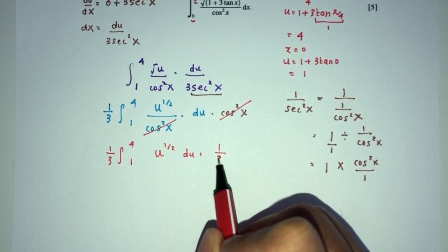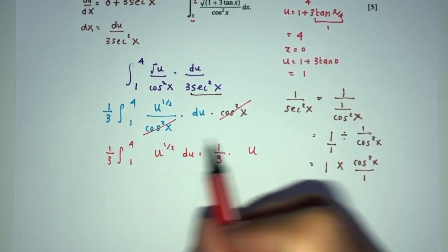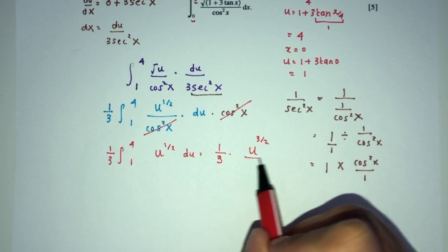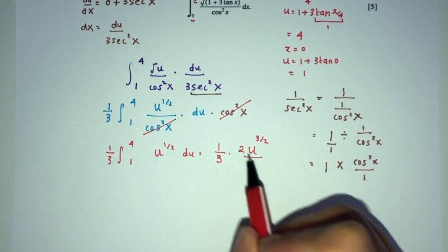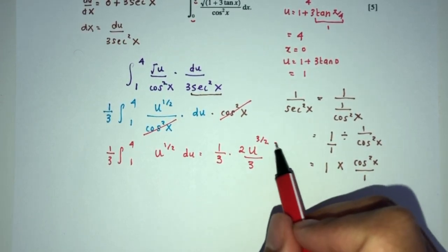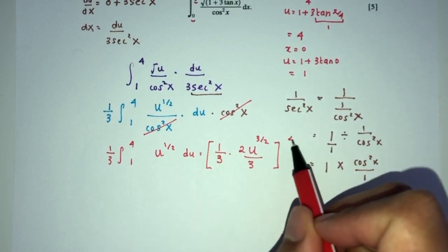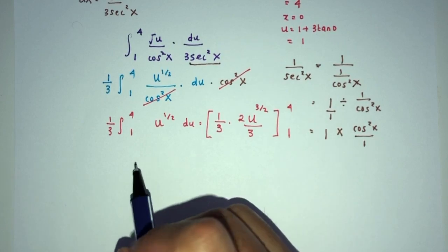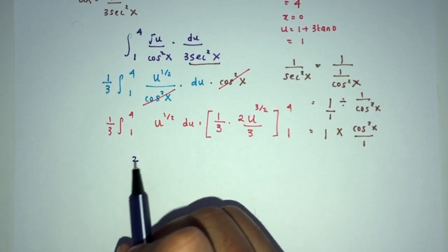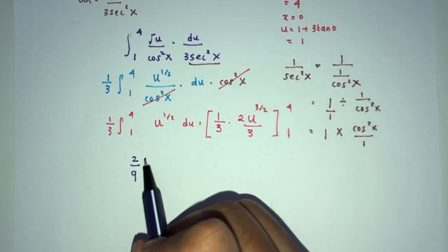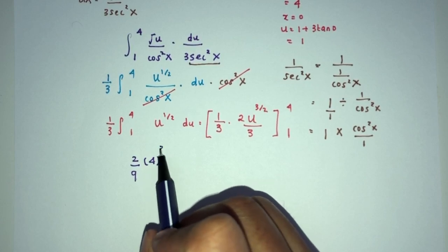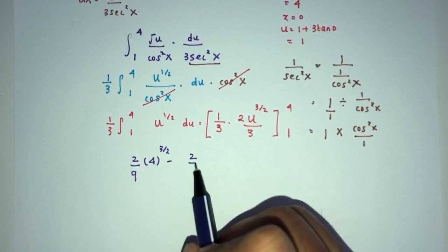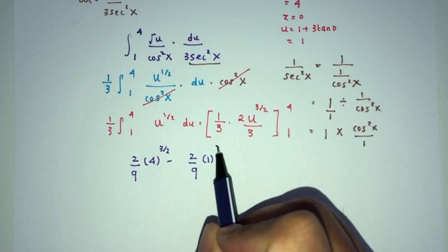That will be 1/3, that will become u plus 1, that should be 3/2. Divide by 3/2, 2 will go here, 3 will go down. And then here we have the limits of the values 4 and 1. So simplify. So we have 2/9, here we have u, which is 4, 3/2. Minus 2/9, 1^(3/2).